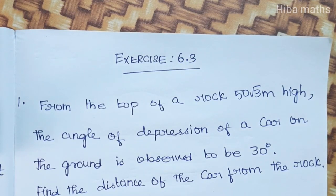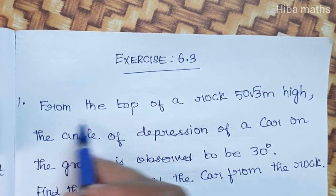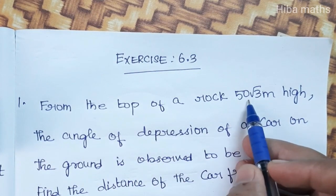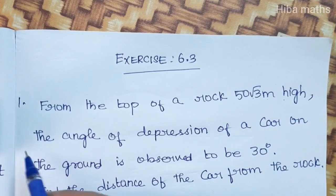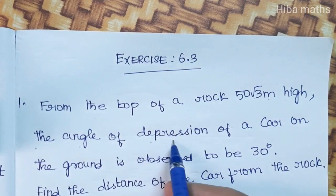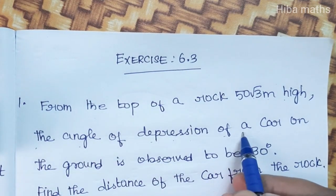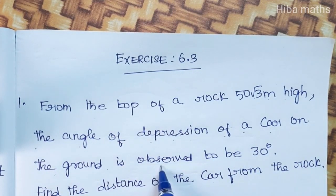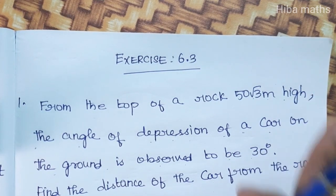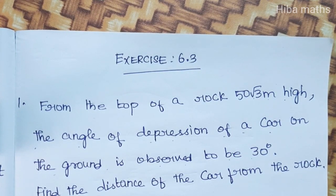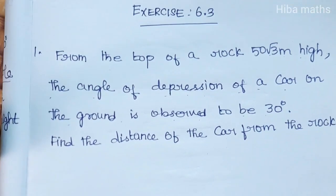Hello students, welcome to Hiba Max. 10th Standard, Exercise 6.3, first question. From the top of a rock 50 root 3 meter high, the angle of depression of a car on the ground is observed to be 30 degrees. If you understand the question at this exercise level, you can understand the question from the first line.